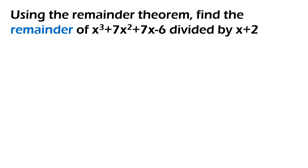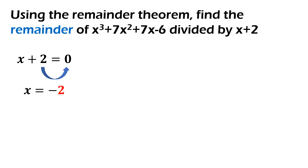Let's have example number 1. Using the remainder theorem, find the remainder of x cubed plus 7x squared plus 7x minus 6 divided by x plus 2. First step is we're going to find the value of x. Using the divisor x plus 2, equate that to 0, and then transpose positive 2. So, yung value ng x natin will be equal to negative 2. Ito yung gagamitin natin sa step number 2. So, in the polynomial function,